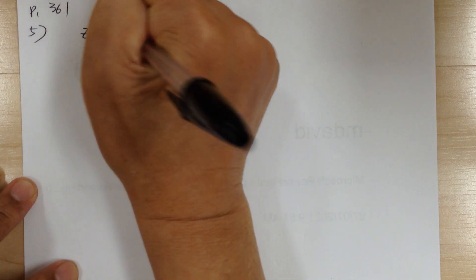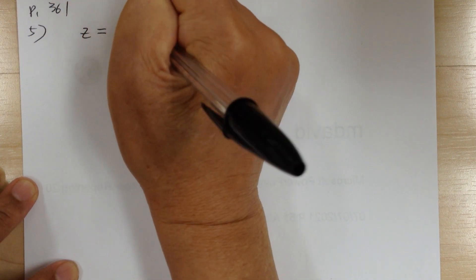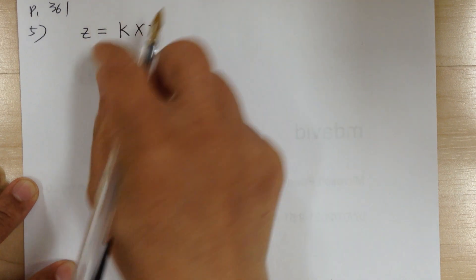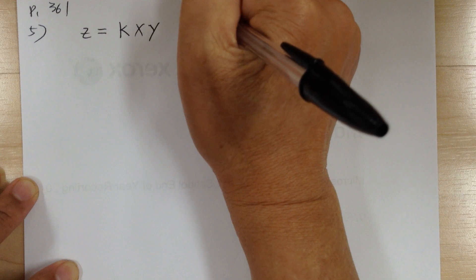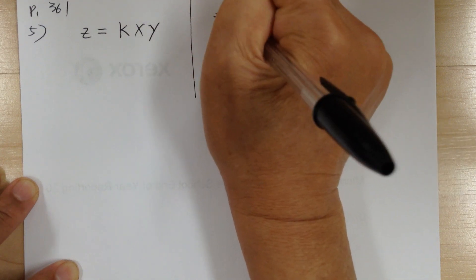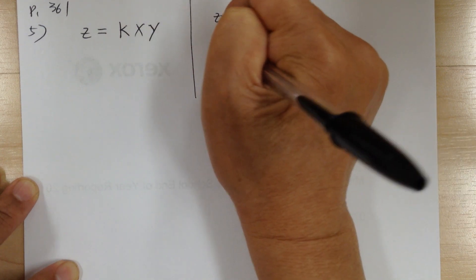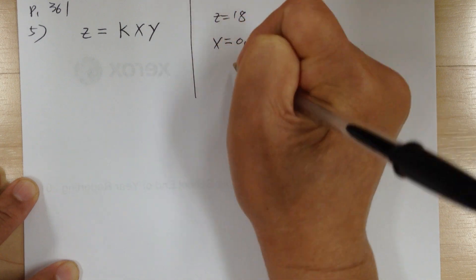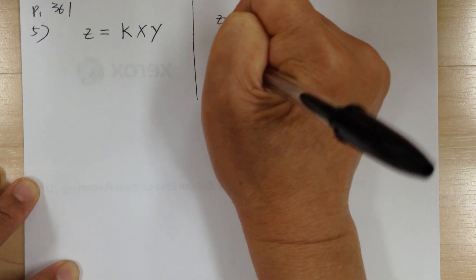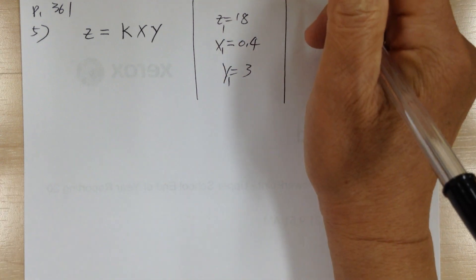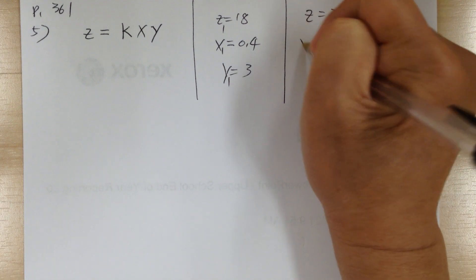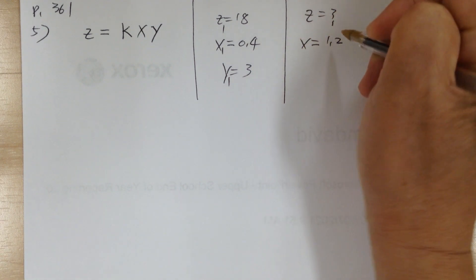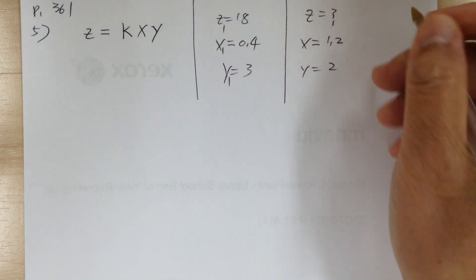Number 5: if z is jointly proportional, the equation is k times x and y. So z is jointly proportional to x and y. Z equals 18 when x equals 0.4 and y equals 3 — that's case 1. Case 2: find z when x equals 1.2 and y equals 2.